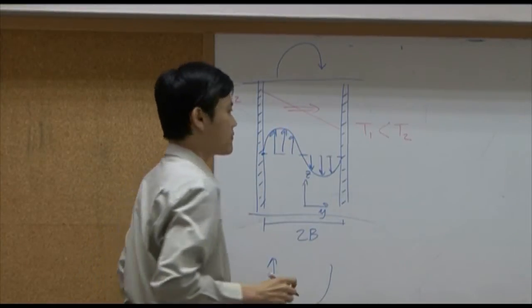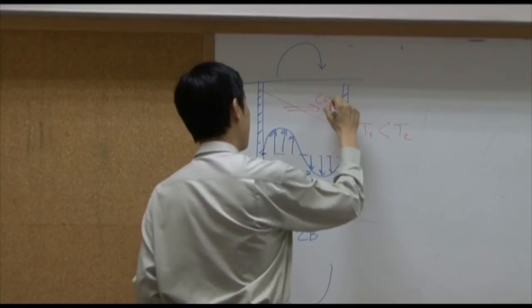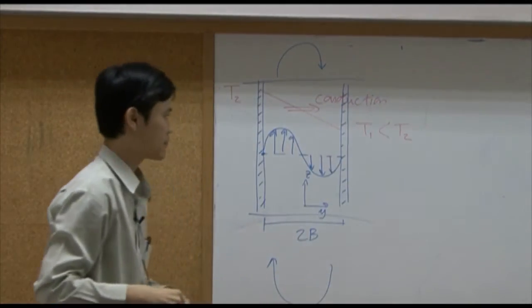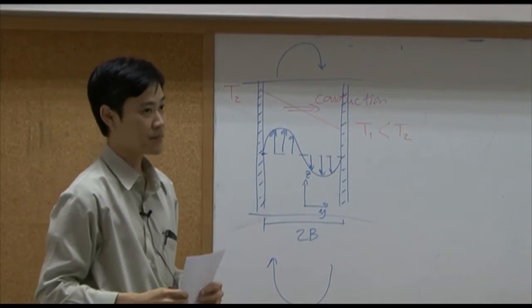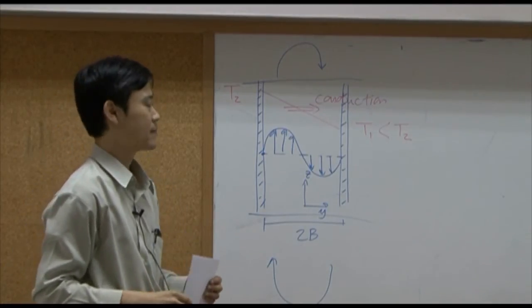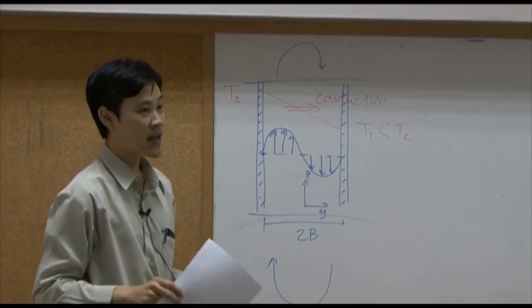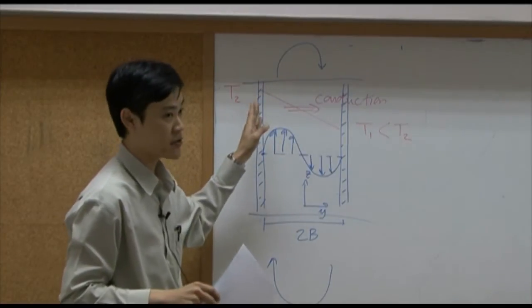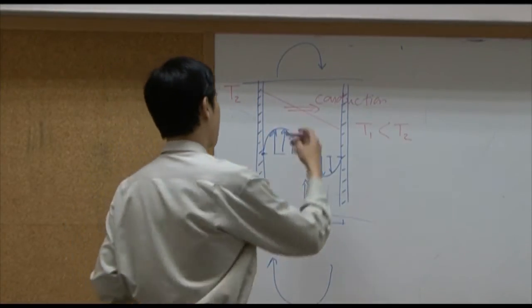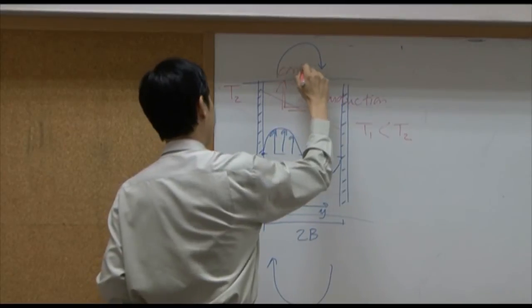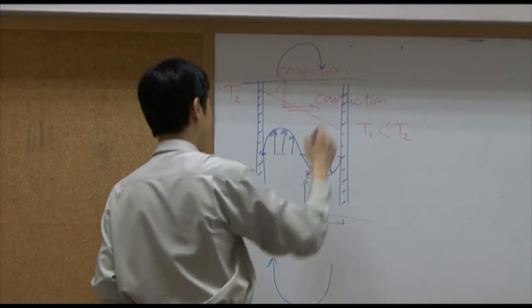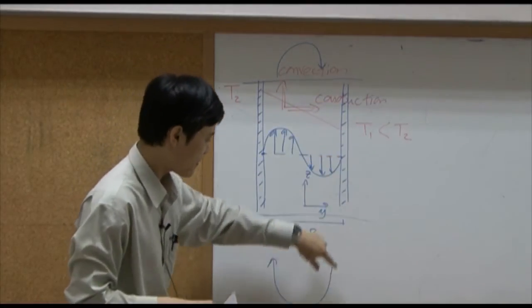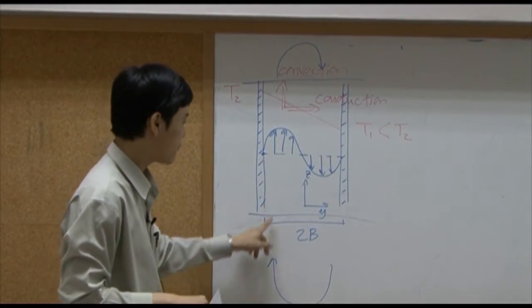So here you have conduction. Do we have convection? In detail, yes we do. We do have convection in Z direction. Because in detail, cold fluid comes down here and starts rising up.